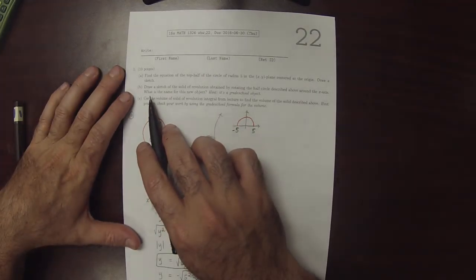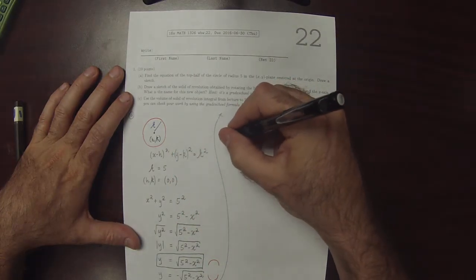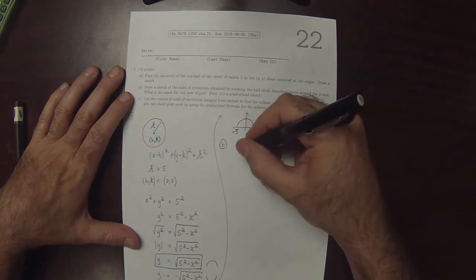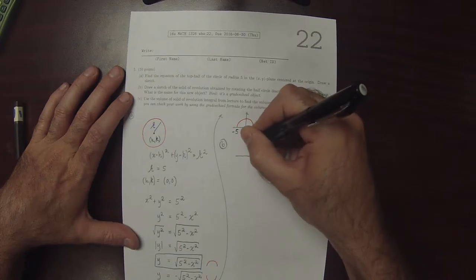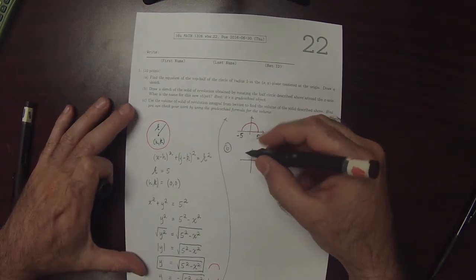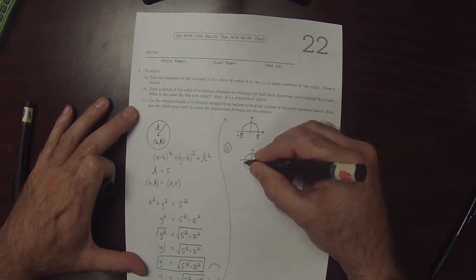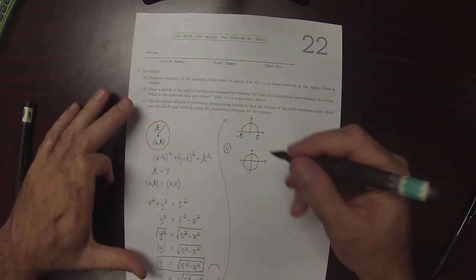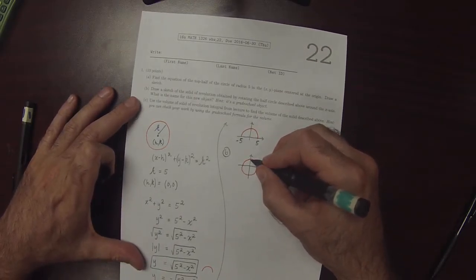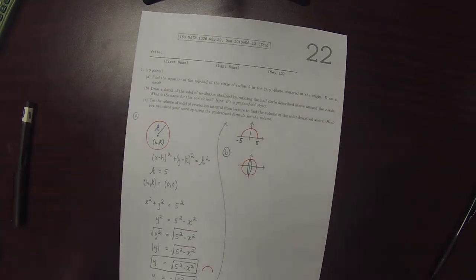Part B, draw a sketch of the solid of revolution by rotating the half circle around the x-axis. When you rotate that half circle around the x-axis, you get a shape that looks like this. So I'll attempt to make it look three-dimensional. So this is supposed to be a sphere.